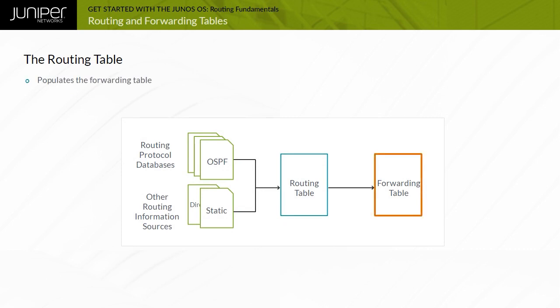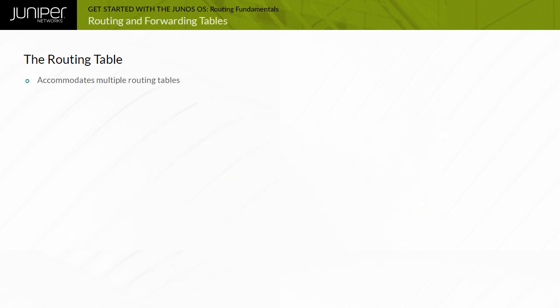The forwarding table determines the outgoing interface and Layer 2 rewrite information — Layer 2 header information such as source and destination MAC addresses — for each packet forwarded by a device running Junos OS. Devices running Junos OS can accommodate multiple routing tables. The primary routing table, iNet.0, stores IPv4 unicast routes. Additional predefined routing tables exist, such as iNet6.0, which Junos OS creates when the configuration requires it. An administrator can create custom routing tables as needed.